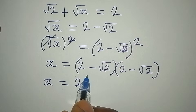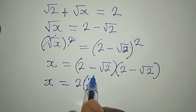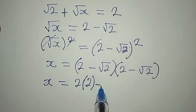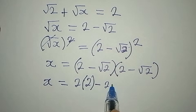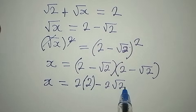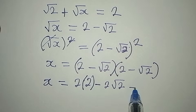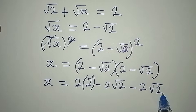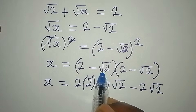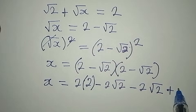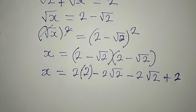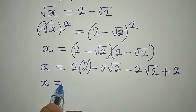We have 2 multiplied by 2, which gives us 4. Then minus 2 times square root of 2, then another minus 2 times square root of 2. Then minus square root of 2 times minus square root of 2 will give us plus square root of 4, and square root of 4 is the same as 2.